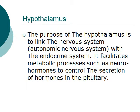The purpose of the hypothalamus is to link the nervous system — specifically the autonomic nervous system — with the endocrine system. It facilitates metabolic processes such as secreting neural hormones to control the secretion of hormones in the pituitary.